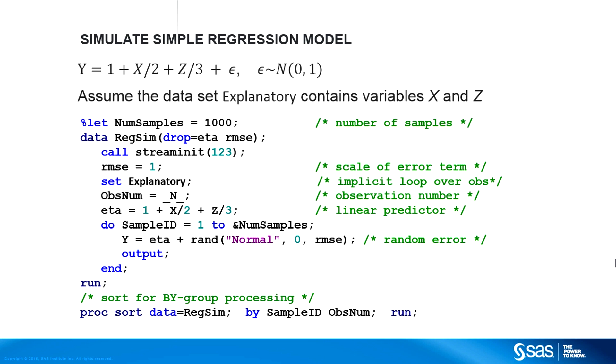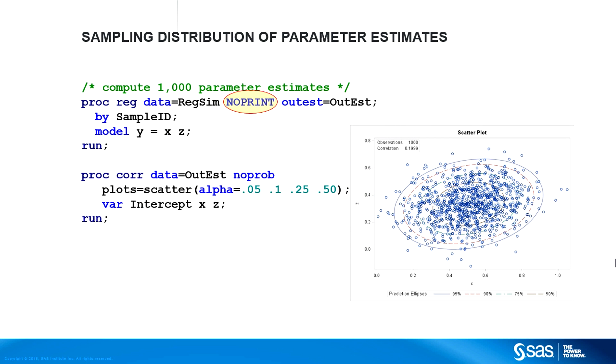You can call PROC REG and use the by statement to produce 1,000 parameter estimates. The scatter plot shows the parameter estimates for the coefficients of x and z. You can see that the estimates are centered around the value 1 half comma 1 third, which is the true value of the parameters in the model. Similarly, the intercept estimates are centered around the value 1.